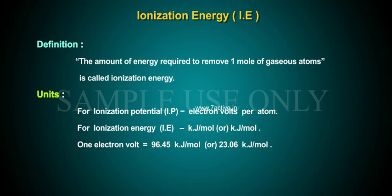Units: For ionization potential (IP), electron volts per atom. For ionization energy (IE), kilojoules per mole or kilocalories per mole. One electron volt equals 96.45 kilojoules per mole or 23.06 kilocalories per mole.